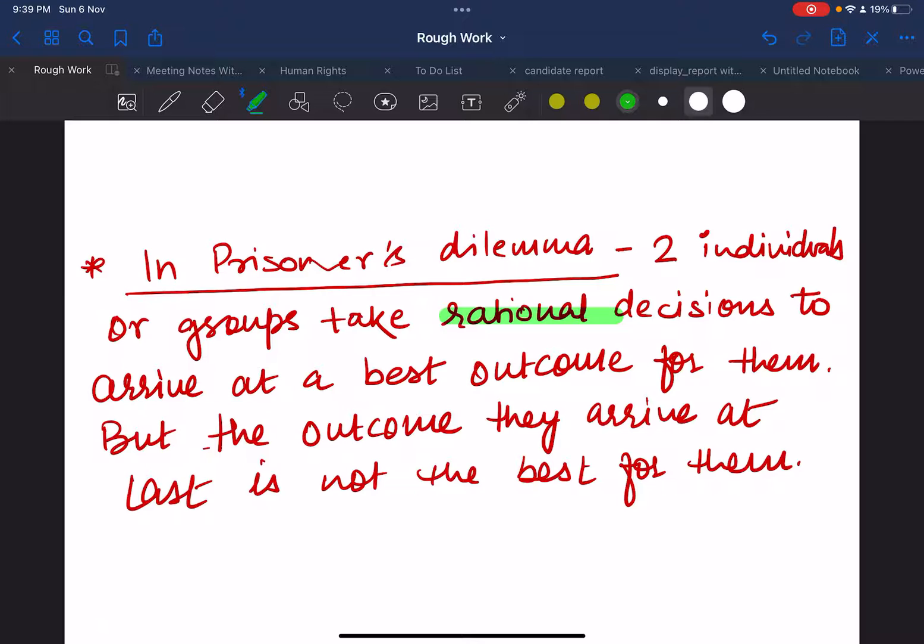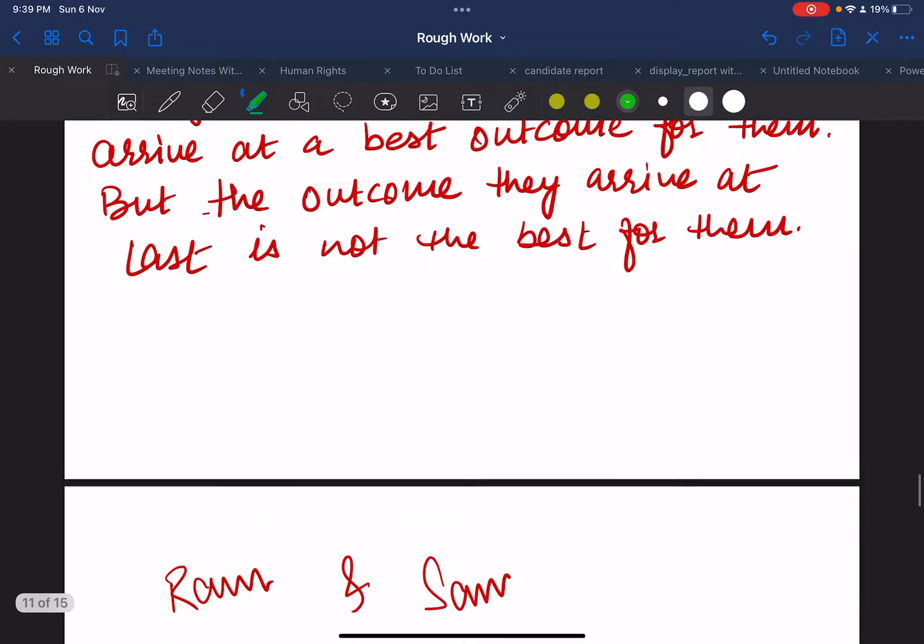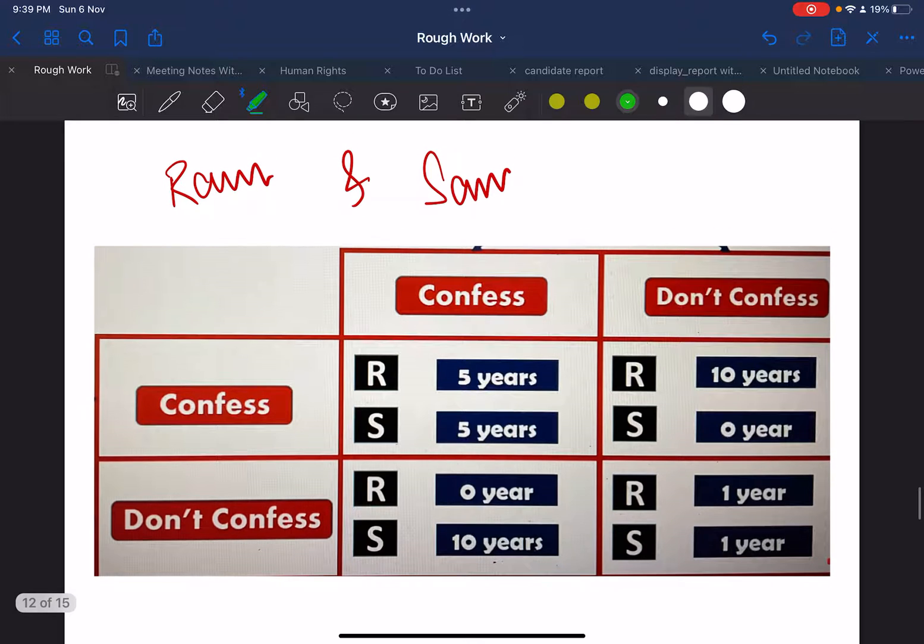It describes a situation where two people are put in different cells, imprisoned, and can't communicate. The police need a confession from one to get the other, so they offer a deal to the prisoner.